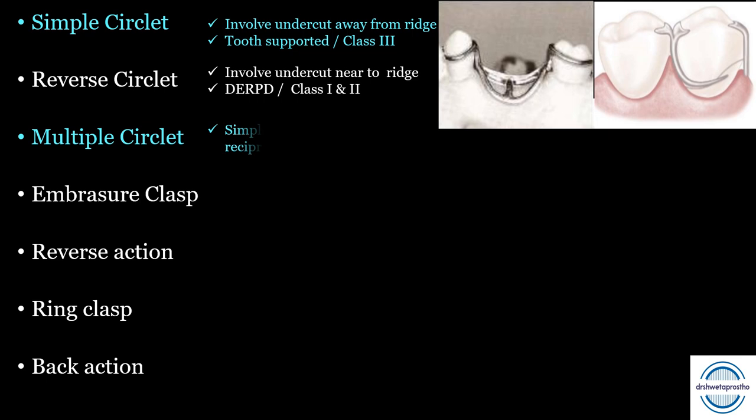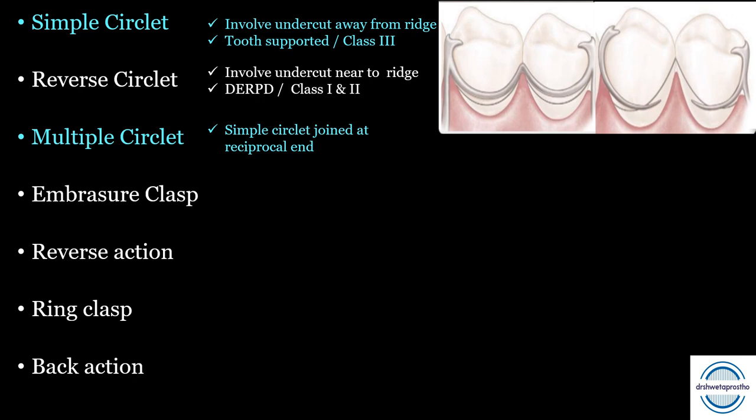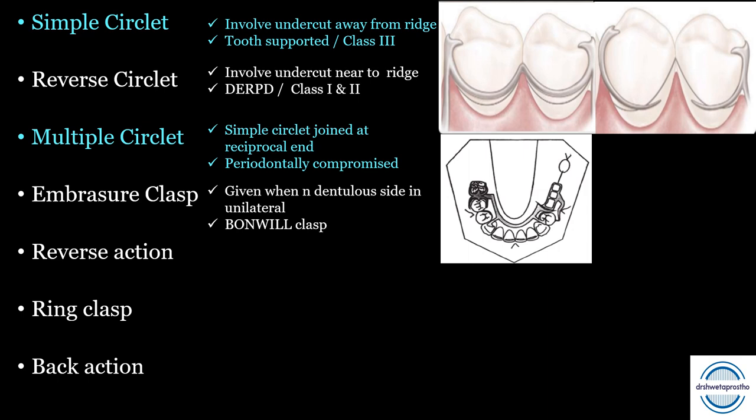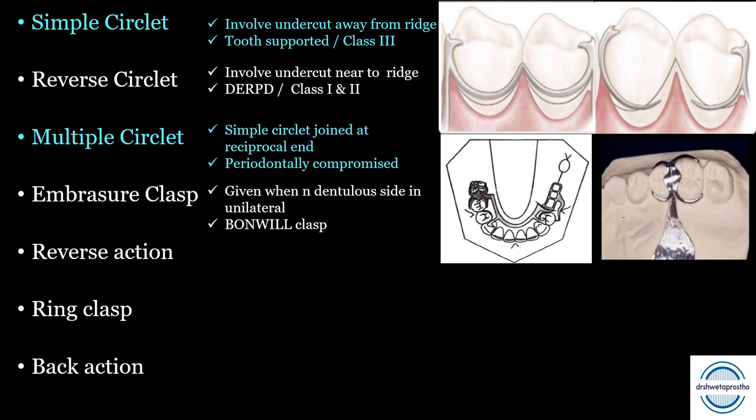The multiple circlet is a simple circlet with joints at the reciprocal end — from the name, it involves multiple abutments — mainly given when the principal abutment is periodontally compromised. The embrasure clasp involves the embrasure area on the dentulous side in unmodified Class 3 and Class 2 cases; it is also called the Bonville clasp. Its main disadvantage is that it requires more tooth preparation to accommodate two clasp assemblies in the embrasure area. The reverse action clasp is also called the hairpin clasp because of its design, mainly given in distal extension RPD cases.